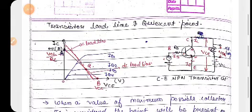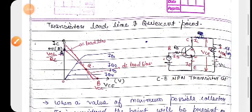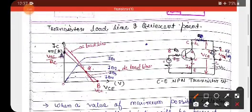What is transistor load line? In the previous video we already discussed about transistor characteristics, where we discussed about CB and CE configuration. Further, we will discuss about CE configuration only. This is the CE configuration transistor circuit — a CE configuration NPN transistor.